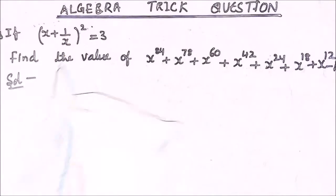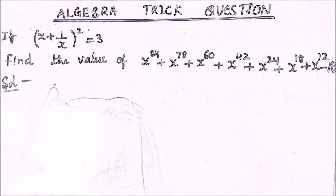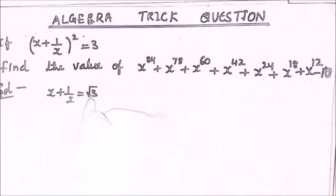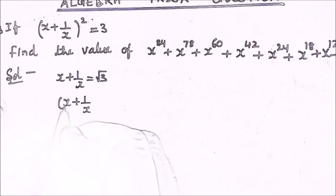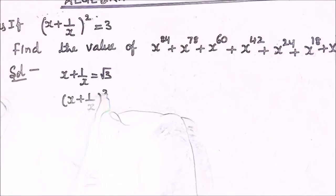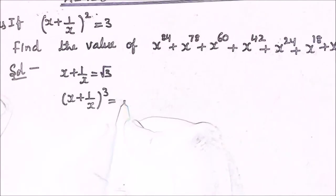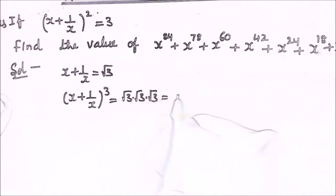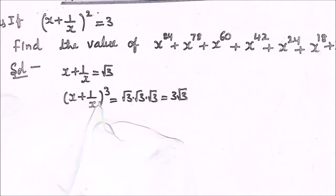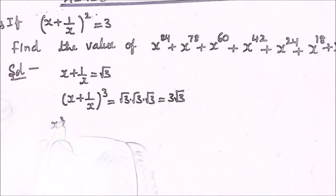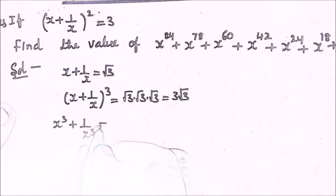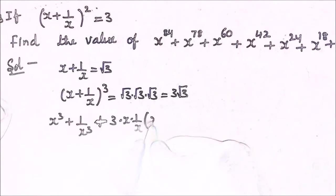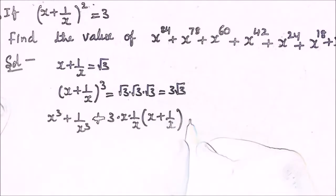We are given x plus 1 upon x squared is equal to 3, so we can write x plus 1 upon x is equal to root 3. If we cube both sides we will get x plus 1 upon x whole cube is equal to root 3 multiplied by root 3 multiplied by root 3, which we can write as 3 root 3. The cube of this expression is x cube plus 1 upon x cube plus 3 times x times 1 upon x, then x plus 1 upon x.